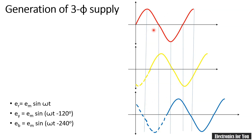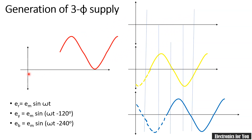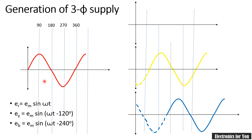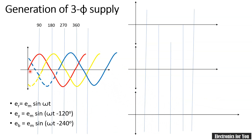We are rotating a set of three coils: red, yellow and blue. If we plot the red wave, followed by yellow which is 120 degrees away, and then blue which is 240 degrees away, we get the complete EMF waveform for the three phase supply. This waveform shows ER, EY and EB. In this way we can draw the waveform for the generation of three phase supply.